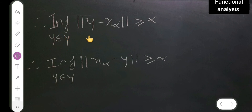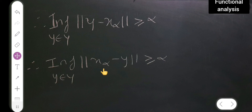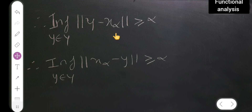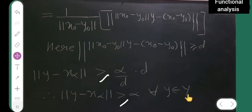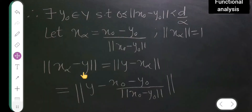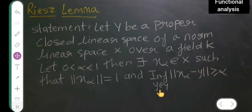Therefore, the infimum over y belonging to Y of the norm of y minus x_α is greater than or equal to α. Interchanging, the infimum over y belonging to Y of the norm of x_α minus y is greater than or equal to α. This completes the proof.